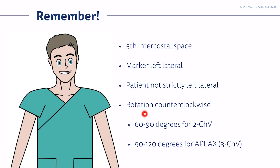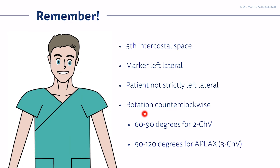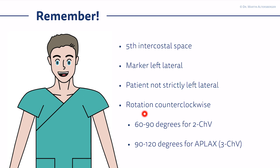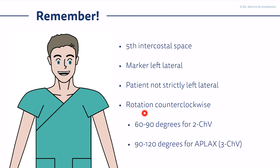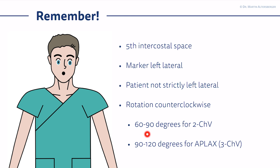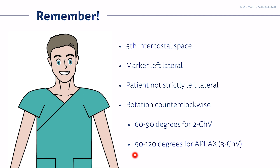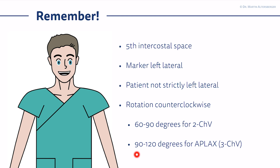Remember: fifth intercostal space approximately — go to the point where you feel probably the heartbeat or where you simply see the left ventricular apex, the marker left lateral. The rotation counterclockwise for the two-chamber view is 60 to 90 degrees from the four-chamber view. For the apical long axis or three-chamber view, it's 90 to 120 degrees.